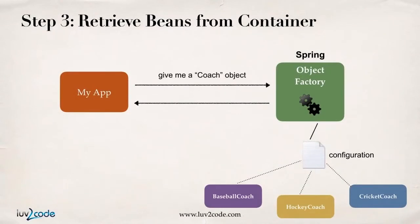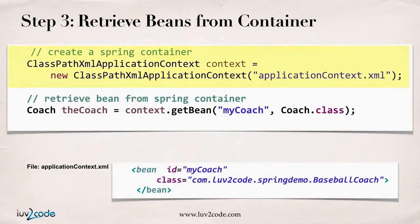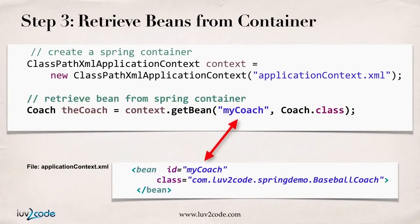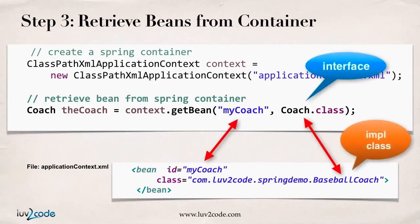Now that we have the container created, the next step is retrieving beans from the container. Your application simply talks to the Spring container and says, give me a coach object. Based on information in the configuration file, it'll give you an implementation of that given interface. Here in step three, I say context.getBean(), passing 'myCoach' — the bean ID from the config file — and coach.class, the name of the interface that BaseballCoach implements. BaseballCoach is the actual implementation, and then you assign it. That's basically what you have to do for retrieving a bean from a Spring container.